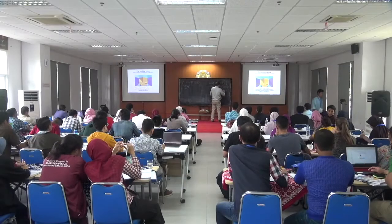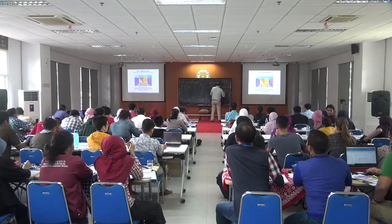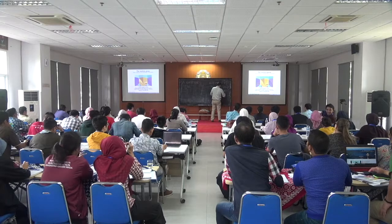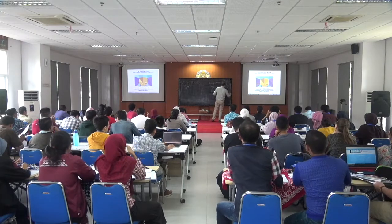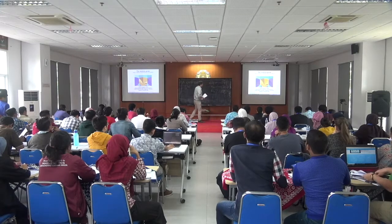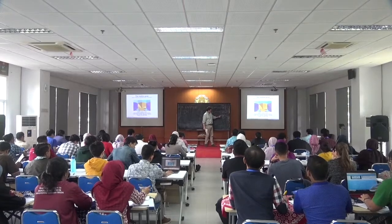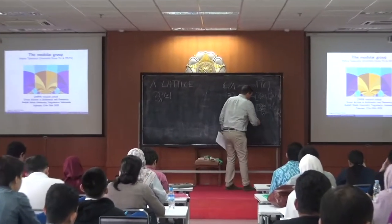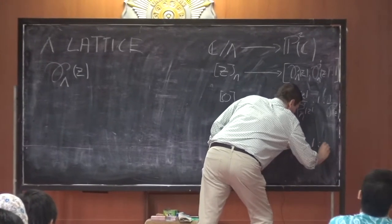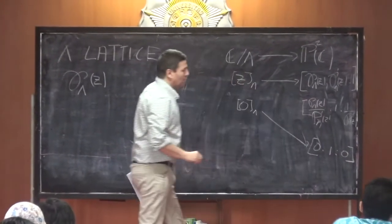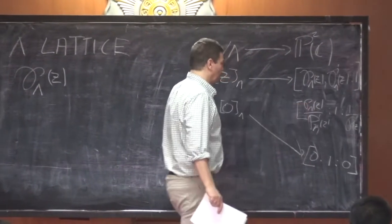We divide by p prime, getting p(λz) divided by p'(λ) here, one here, and one over p' here. When z goes to zero, the one-over-p' term goes to infinity faster than the other, so this goes to zero, and the image of zero is just the point at infinity [0:1:0], because the pole of p' at zero is higher than the pole of p.